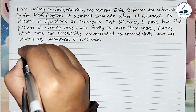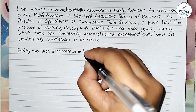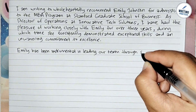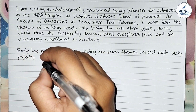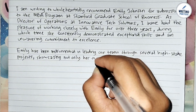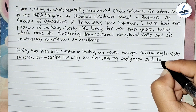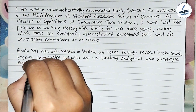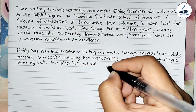In the second paragraph, this is where you write about the candidate's professional skills and achievements. You can first write key achievements — highlight specific projects or tasks where the candidate demonstrated outstanding skills. Here is a good example: 'Emily has been instrumental in leading our team through several high-stake projects, showcasing not only her outstanding analytical and strategic thinking skills but also her natural leadership ability.'